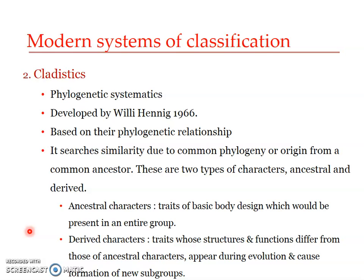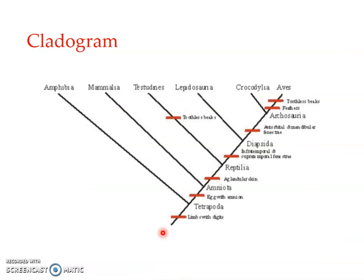During the search for these characters, there are two kinds of characters which we usually consider: ancestral characters and derived characters. Ancestral characters refer to the characters which are present in the entire group of a clade. Here in this figure we can see one of the ancestral characters of the whole group.